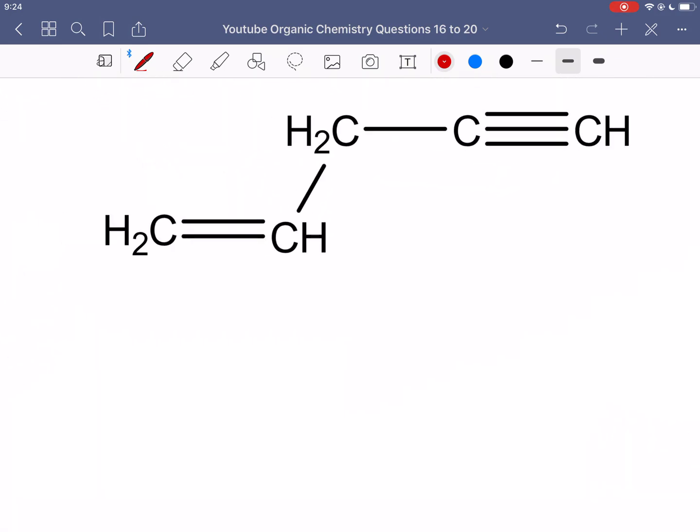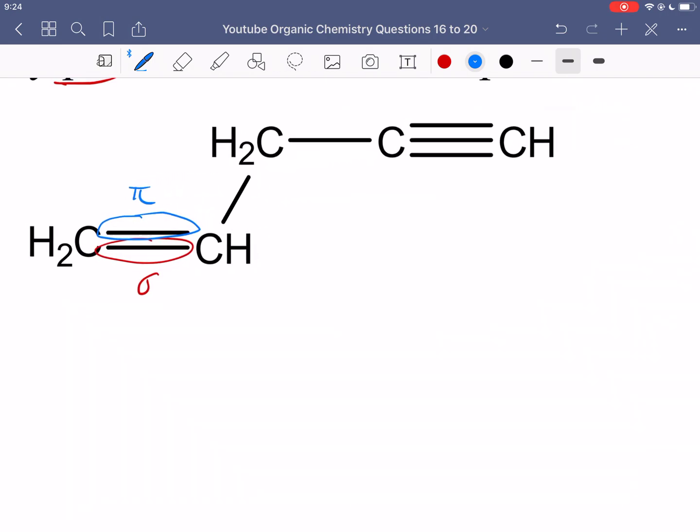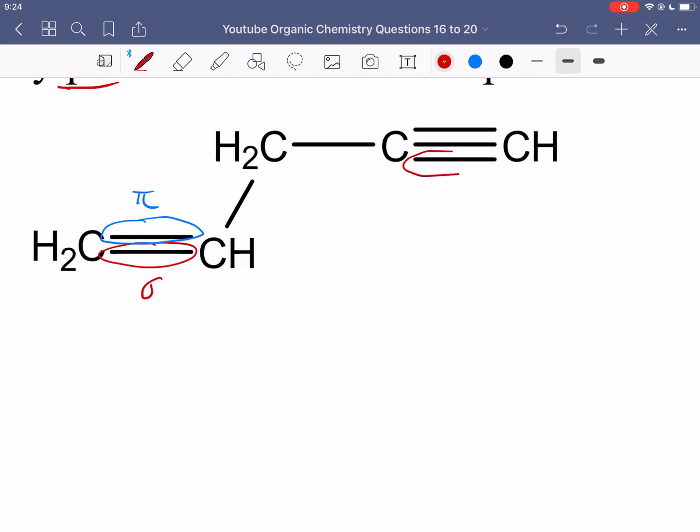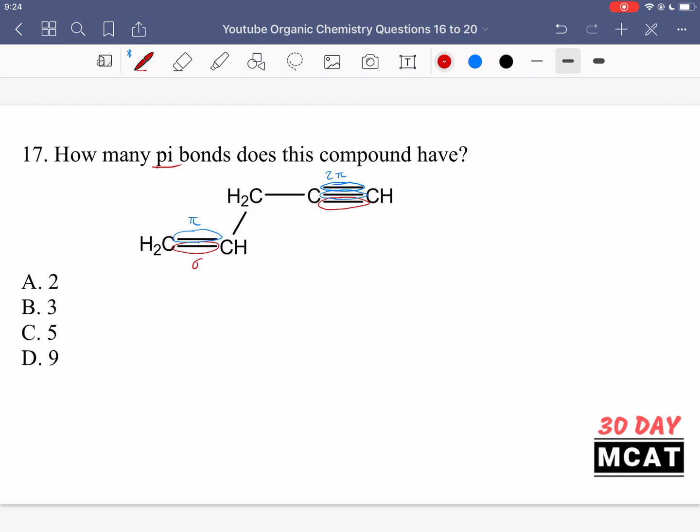So we're asked for how many pi bonds? All of these are sigma bonds. But then over here on the left, we have a double bond. This first bond, that is a sigma bond. But then the second bond, that is a pi bond over there. Same thing over here on the right. First one, we have a sigma bond, but then after that, we have a pi bond. And then the third bond as well is due to unhybridized p orbitals overlapping. So we have here two pi bonds. That means in total, we have three pi bonds in this compound.